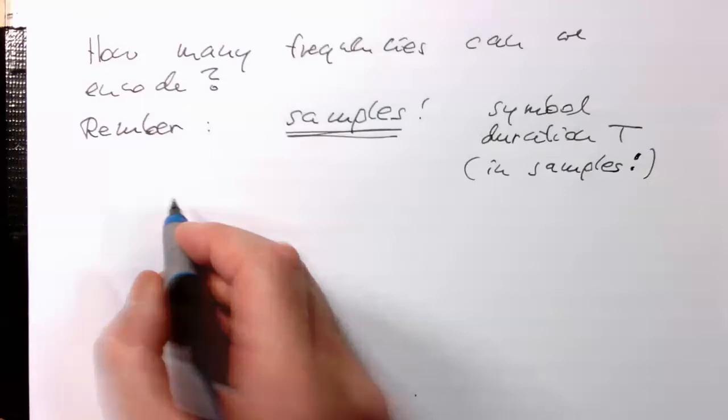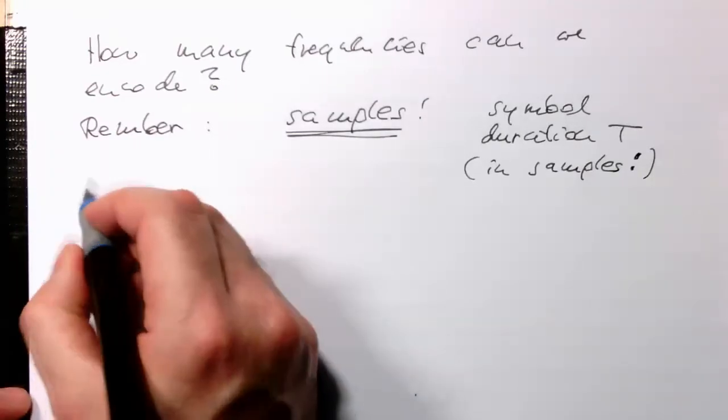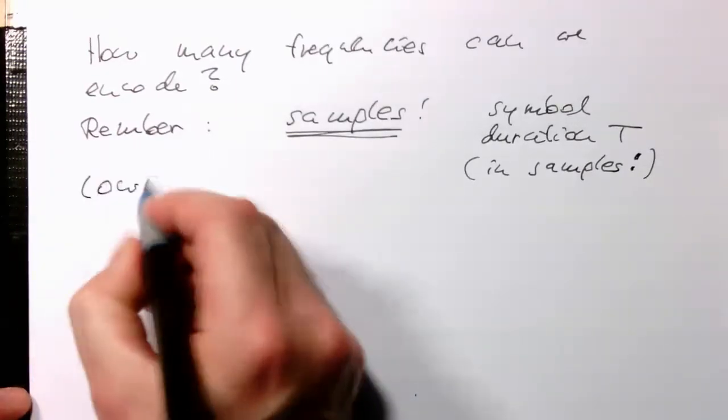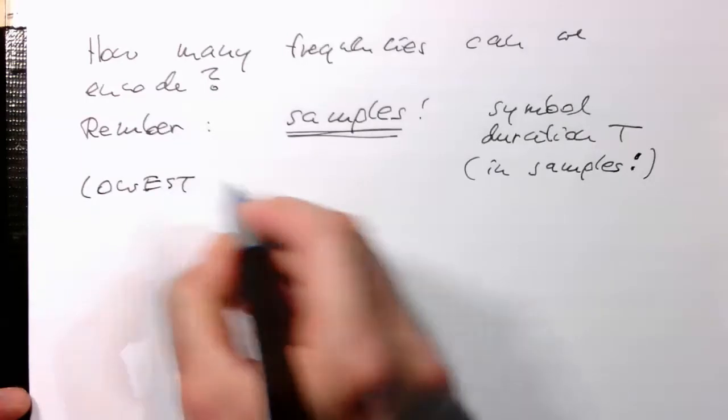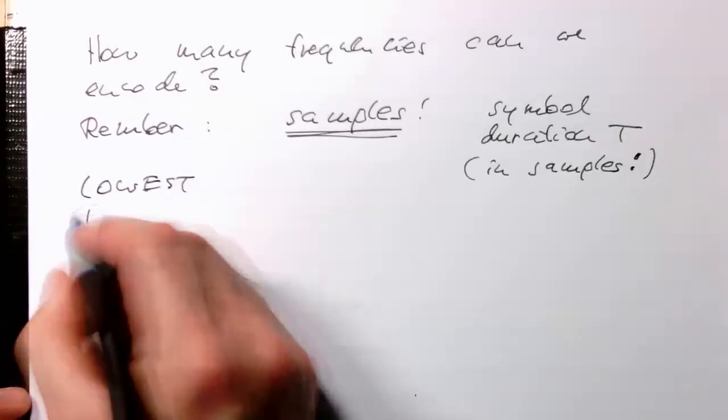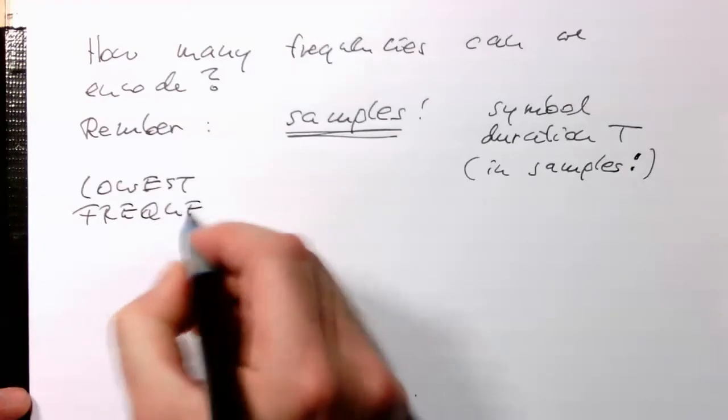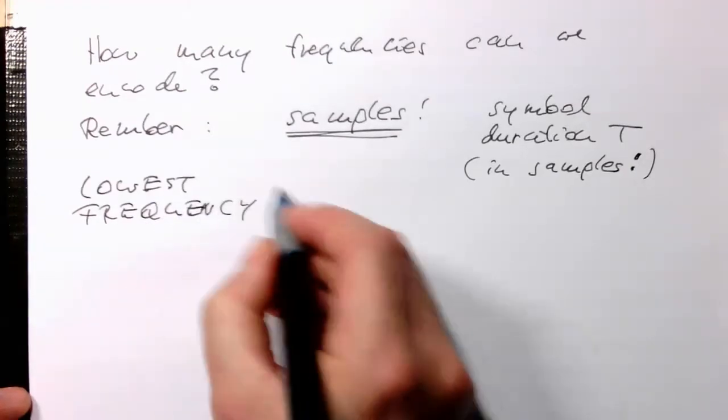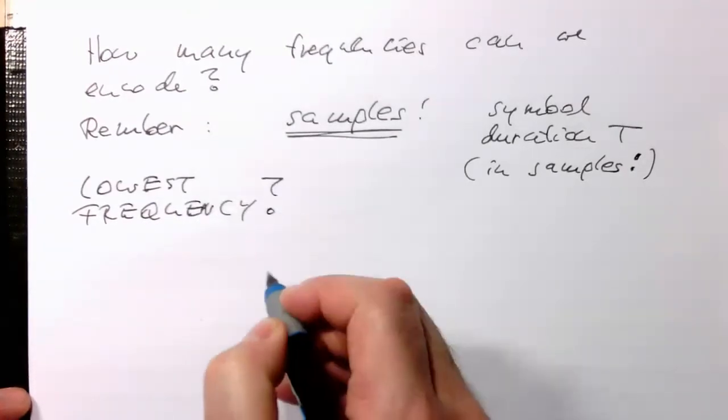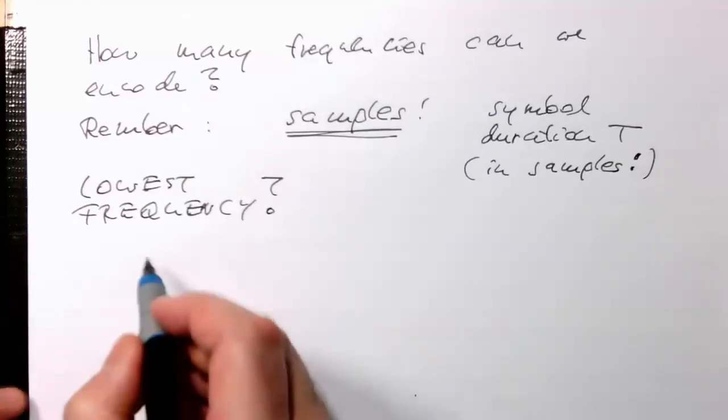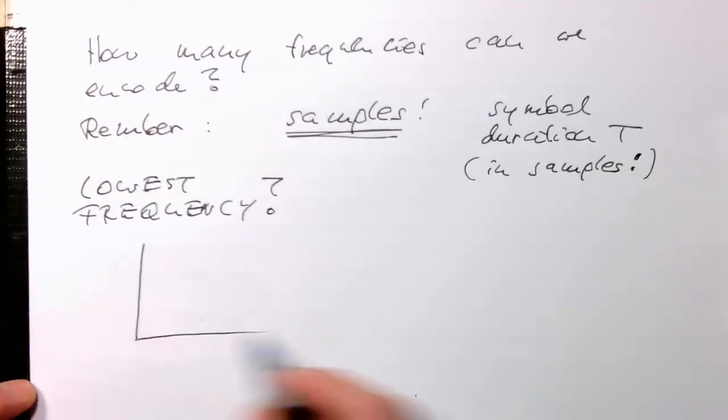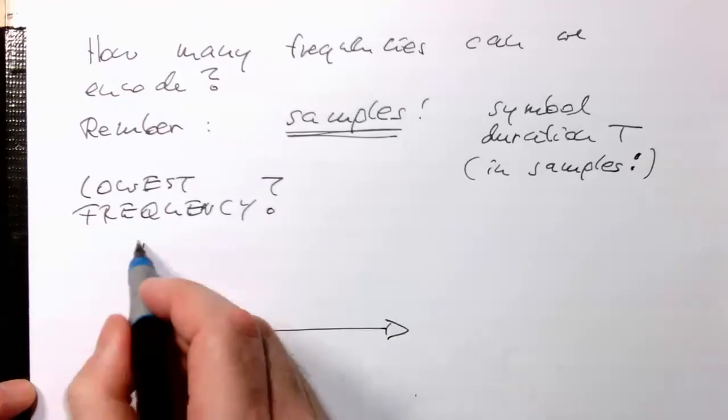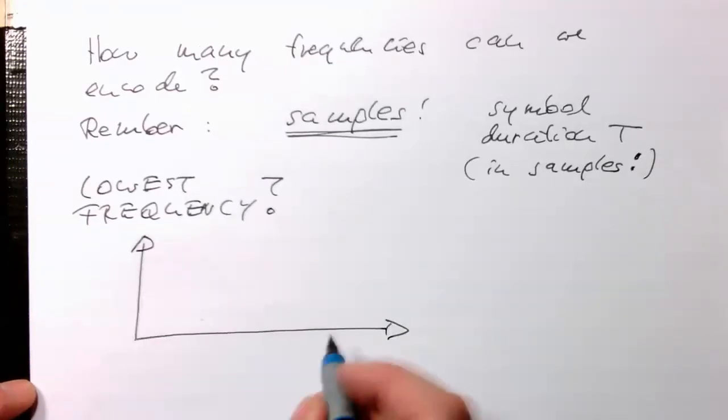So let's look, what is the lowest frequency we can encode? That's pretty straightforward if we think about it. This is determined by our symbol duration t.